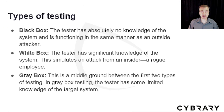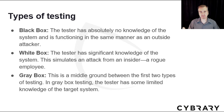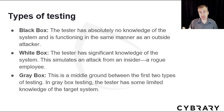When conducting your penetration test, you may use one of three types of boxes. With a black box scenario, the tester has absolutely no knowledge of the system and is functioning in the same manner as an outside attacker. White box is where the tester has significant knowledge of the system, simulating an attack from an insider or rogue employee. Gray box is somewhere in between — the tester has some limited knowledge of the targeted system. Use black box testing to simulate a complete outside attack, and white box for an insider-type attack.